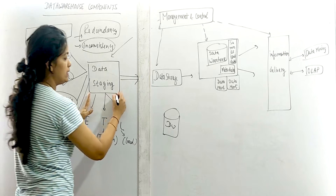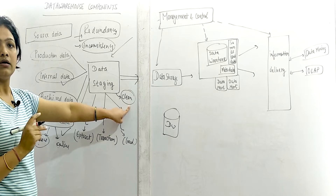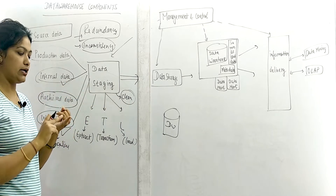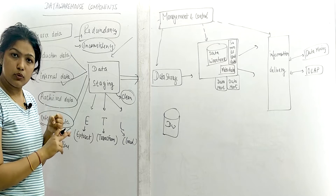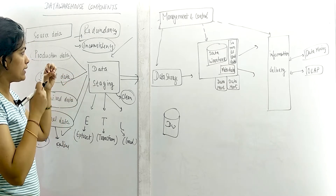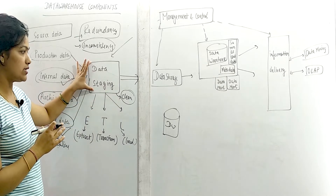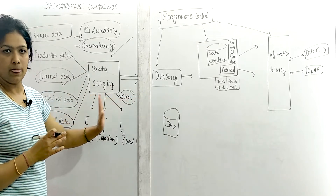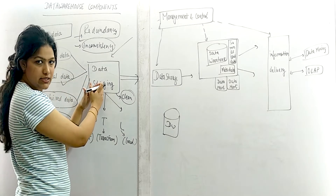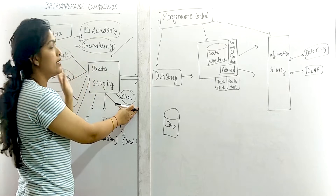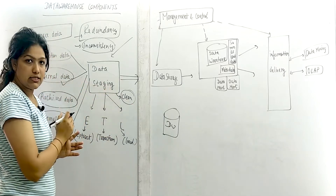That is why we first go to the data staging phase. Data staging will clean the data — it will correct the data, eliminate duplicate data, eliminate inconsistent data and ambiguous data. All incorrectness and duplicates are cleaned in this data staging phase. So data staging is mainly used for cleaning the data before storing it. We collect data from source data, then go to the data staging phase to remove redundancy, inconsistency, and ambiguity.